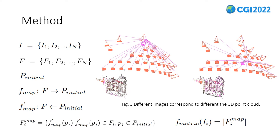The main idea is that the contribution of each image to the point cloud is different. Some image pairs with weak feature matching contribute less to the point cloud, which generates sparse regions in the point cloud. For example, in Figure 3, the center image with all connections on the right side contains more feature points and corresponds to more 3D points than that on the left side. Therefore, the center image on the right side contributes more compared to the one on the left side. In order to quantify the contribution of different images, we propose a contribution metric function for the initial reconstruction for all images.